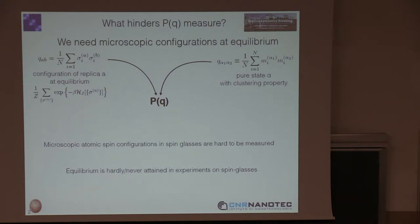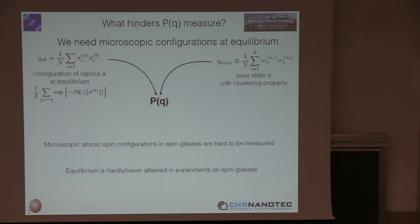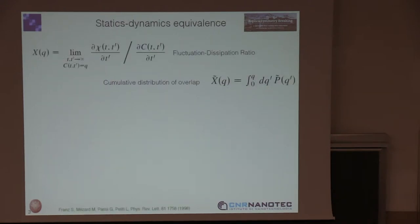This P(Q) between ground states is computed as the overlap between equilibrium configurations or pure states at equilibrium. And equilibrium is hardly or never attained in experiments in spin glasses. So a first proposal to overcome this problem was put forward in the late 90s by Silvio, Giorgio, Mark, and Luca Peliti.